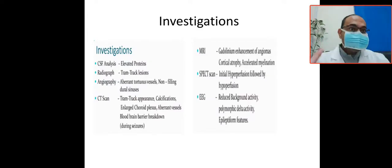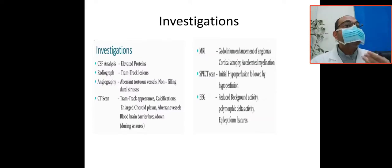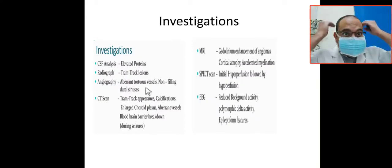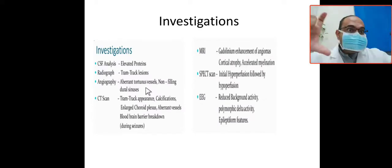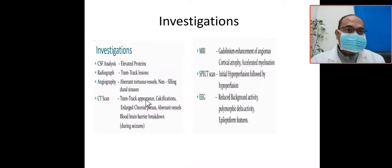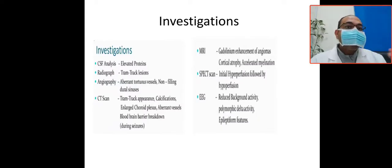Clinically, assess the baby for seizure, port wine stain, and neurological deficit, and refer to ophthalmologist for glaucoma. For investigations: lumbar puncture looking for elevated protein; skull X-ray looking for tram track lesions — a classic finding; angiography looking for tortuous dilated cortical veins; CT for tram track calcifications; and MRI looking for cortical atrophy.